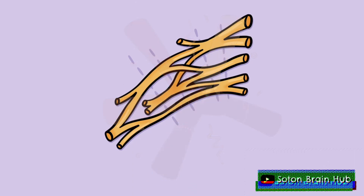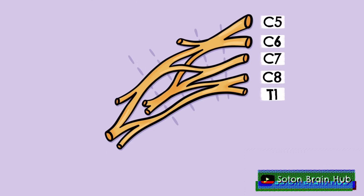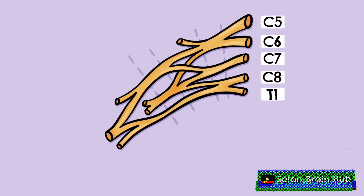Specifically, the brachial plexus contains both motor and sensory fibers originating from spinal segments C5 to T1. The brachial plexus can be divided into five sections. Let's take a look at these different sections in turn to see how they are formed.